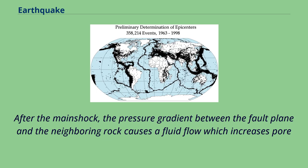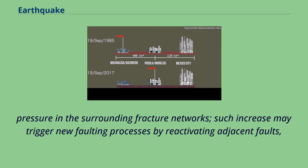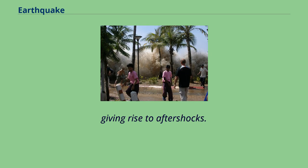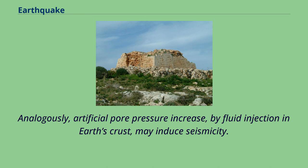After the main shock, the pressure gradient between the fault plane and the neighboring rock causes a fluid flow which increases pore pressure in the surrounding fracture networks. Such increases may trigger new faulting processes by reactivating adjacent faults, giving rise to aftershocks. Analogously, artificial pore pressure increase by fluid injection in Earth's crust may induce seismicity.